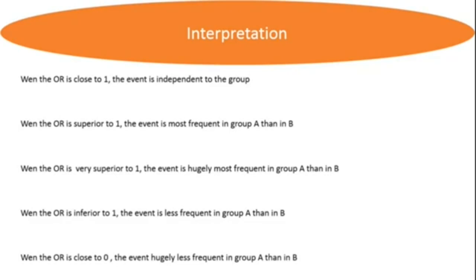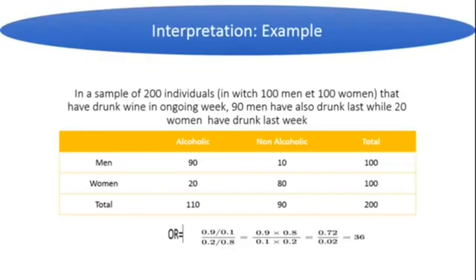If the odds ratio is much higher than 1, the event is hugely more frequent in group A than in group B. When the odds ratio is less than 1, the event is less frequent in group A than in group B, meaning those in group B tend not to develop the disease. When the odds ratio is close to zero, the event is hugely less frequent in group A than in group B.